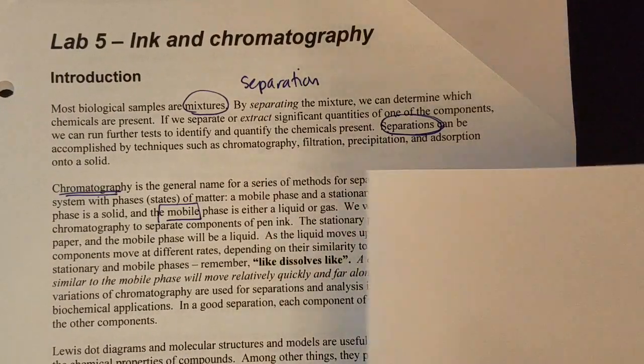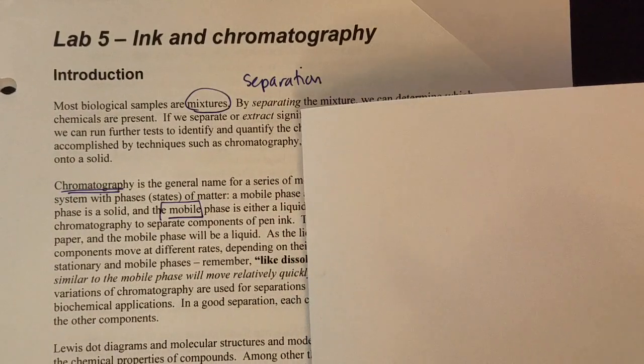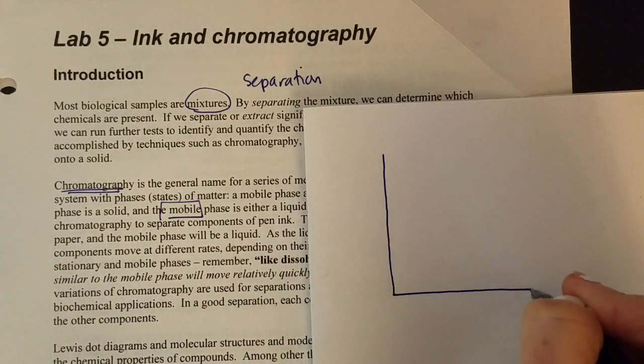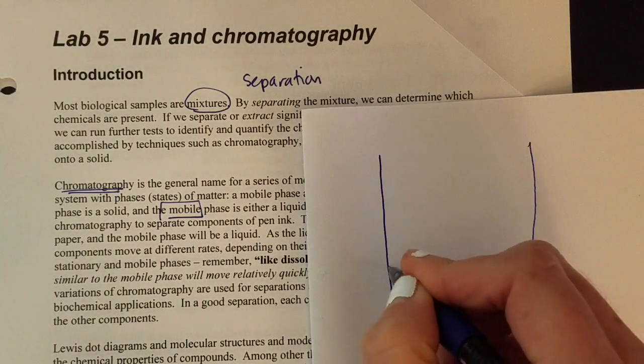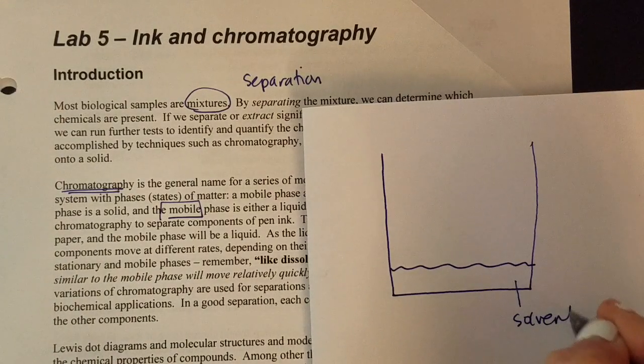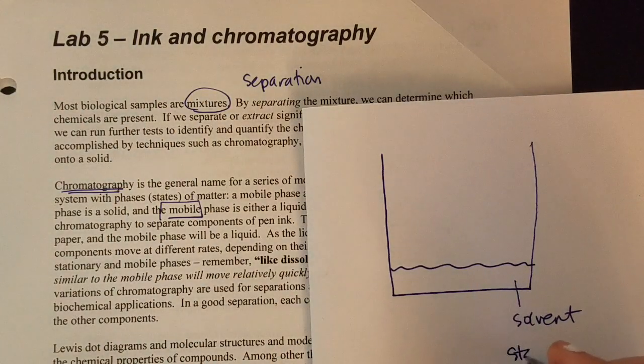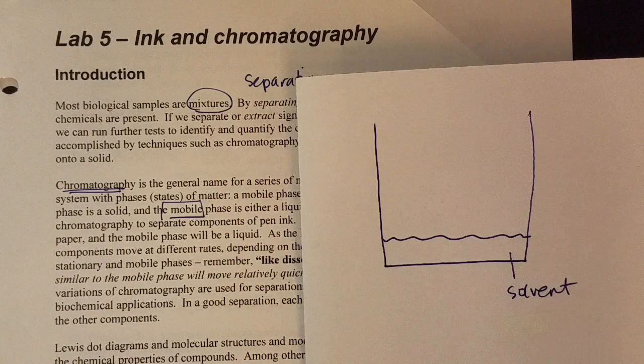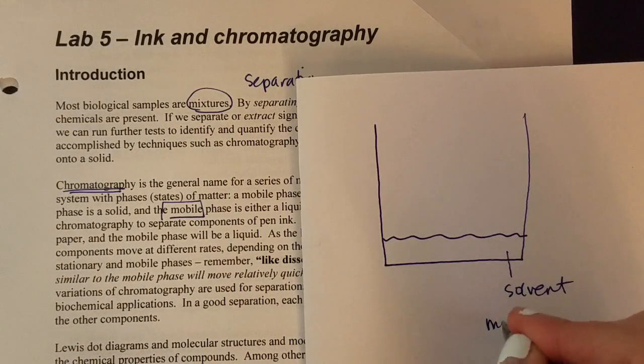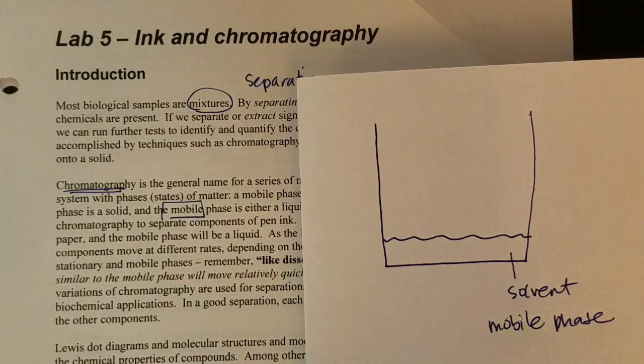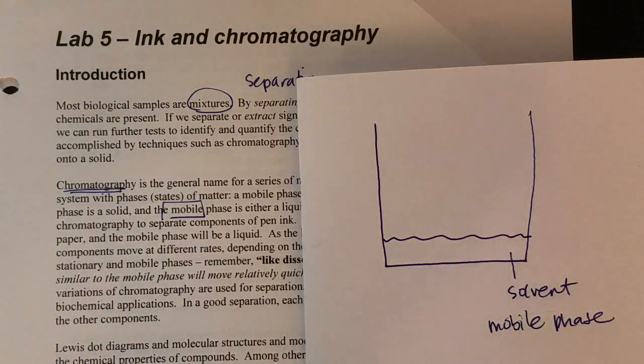So if I can sketch out for you the setup that you're going to use in today's experiment, we're going to have a beaker and in the bottom of that beaker we're going to put a solvent, and that solvent is what we would call the mobile phase. Mobile as in it can move, like we used to call our phones mobile phones because they could move compared to a house phone.